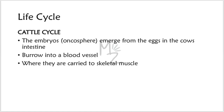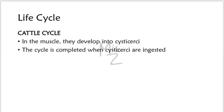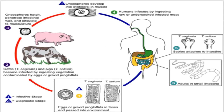Cattle cycle: the embryos — the oncospheres — emerge from the eggs in the cow's intestine. They burrow deeper into blood vessels where they are carried to the skeletal muscles of the cows. In the muscle, they develop into cysticerci. This cycle is completed when the cysticerci are ingested by human beings.